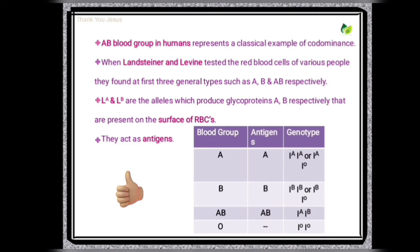The AB blood group in humans represents a classical example of codominance. When Landsteiner and Levine tested red blood cells of various people, they found three general types: A blood group, B blood group, and AB blood group, represented by alleles LA and LB. Both A and B alleles produce glycoproteins — A and B respectively — that are present on the surface of red blood cells (RBCs) and act as antigens.